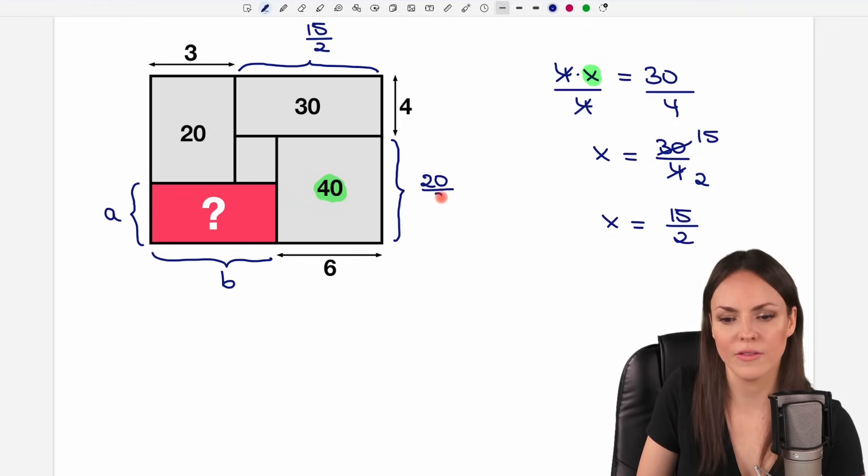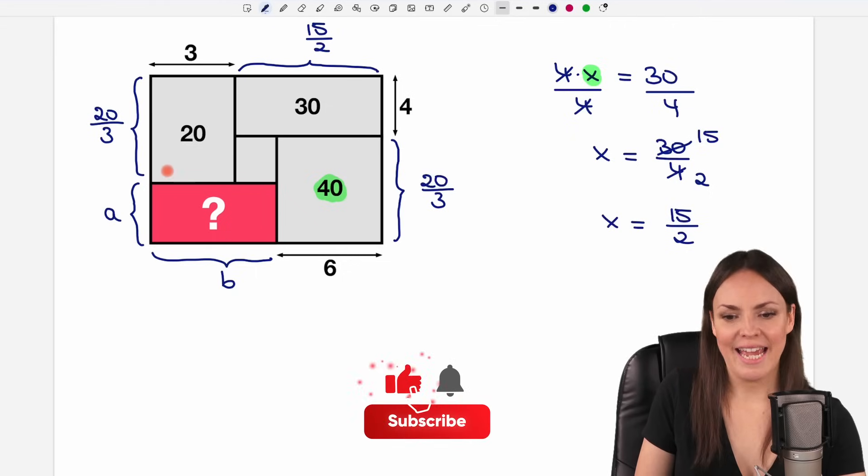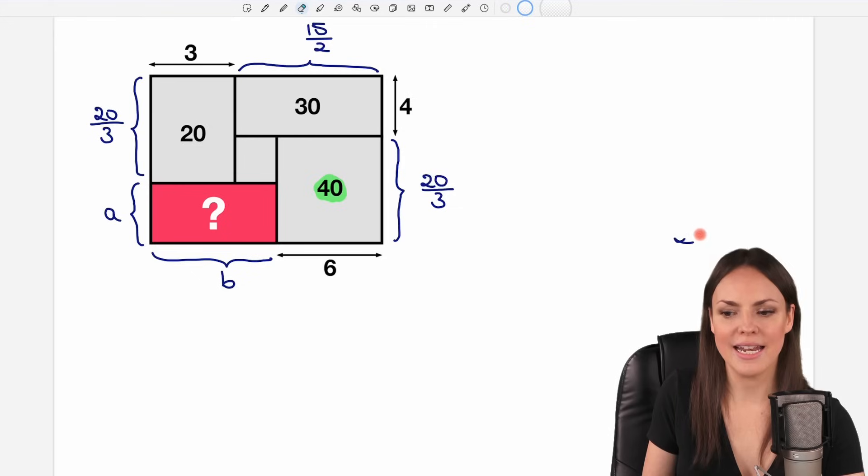for the length of this side. And the same here we take the area of the rectangle, the 20, and divide it by the length of the other side by the 3 to get the length of the other side of the rectangle. Okay, how does all of this help us now to find A and B?